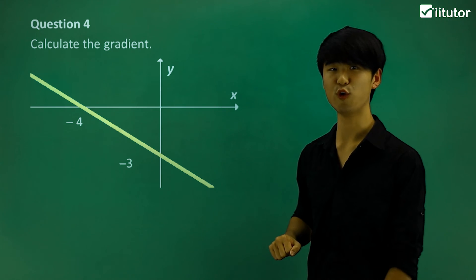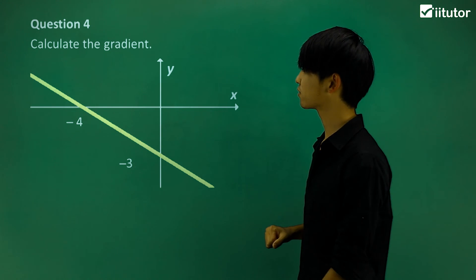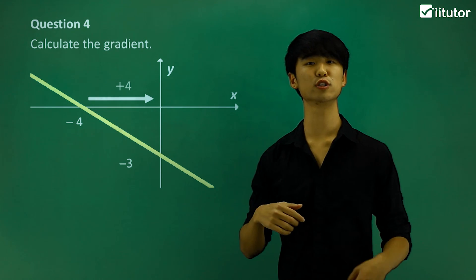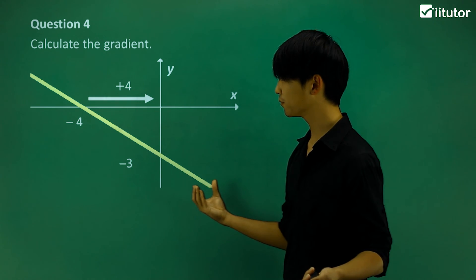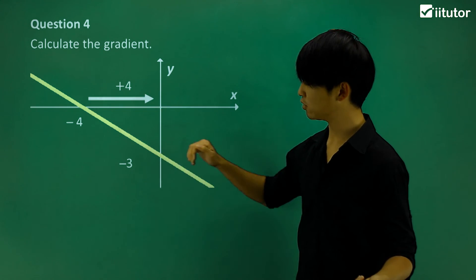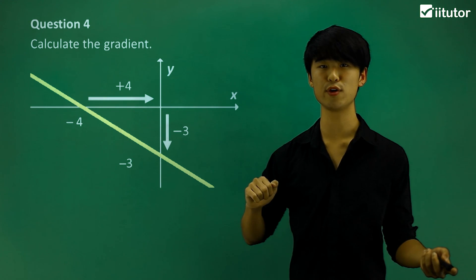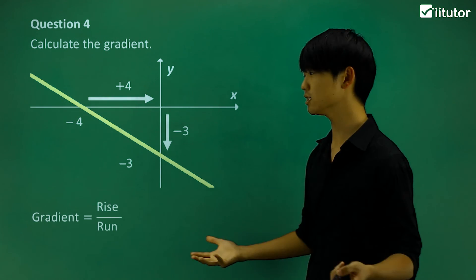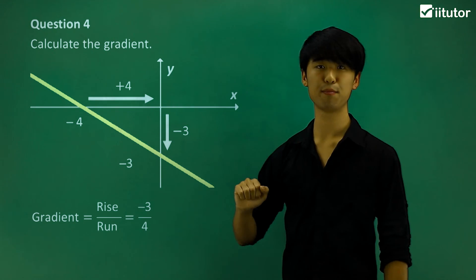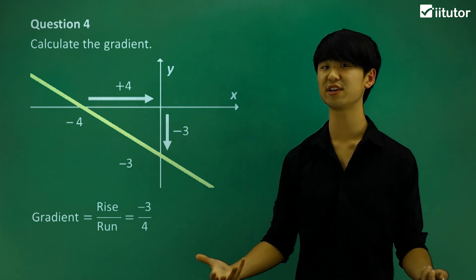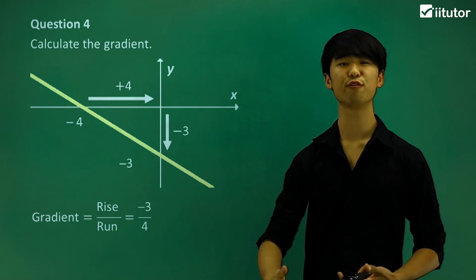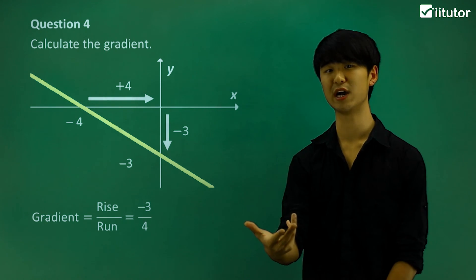Now moving on to question 4. Let's take a look at this line's run. From negative 4 to 0 is a positive 4 — not a negative 4, it's a positive 4. And the rise here is negative 3. So the rise over run in this case is negative 3 over positive 4, giving a gradient of negative 3 over 4. That's how we find the gradient using rise over run.